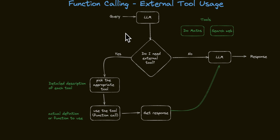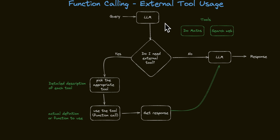First, let's understand why you need function calling or external tool usage. By their nature, LLMs have certain limitations. For example, most LLMs are not good at doing mathematics or calculations. Or each LLM has a certain cutoff training date, beyond which it's not going to have any access to the data. So you probably need to do a web search to augment the LLM when it's generating responses. For that, you give the LLM the ability to use these external tools or do function calling to a specific function which implements this functionality.